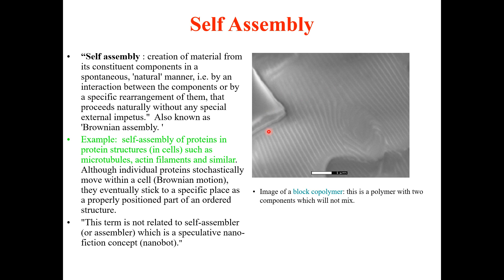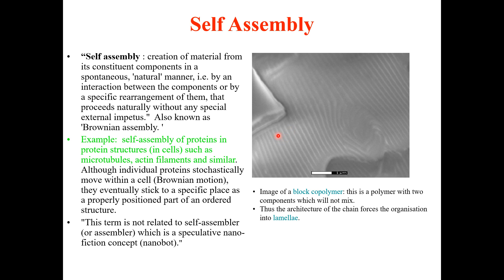A good example of self-assembly is a block copolymer — a polymer made from two components that will not mix. Because the two components don't mix, the architecture of the chain forces organization into lamellae. This is a good example of the self-assembly process. In summary, self-assembly is a process where constituent components bond spontaneously and naturally to form larger-scale or nanoscale molecules.